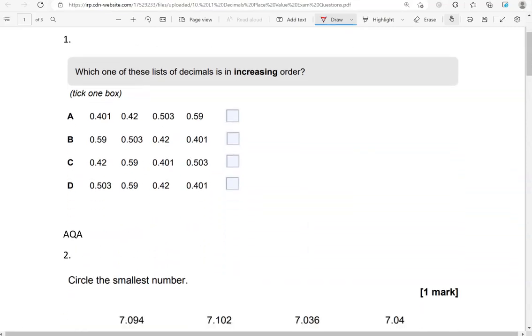Which one of these lists of decimals is in increasing order? Increasing order means that they go up, so from the smallest to the largest.